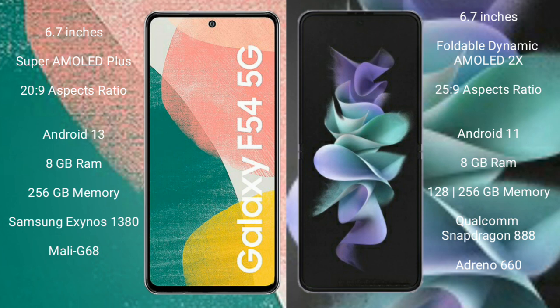The Samsung Galaxy A54 comes with 8GB RAM and 256GB internal storage, powered by the Samsung Exynos 1380 processor with Mali-G68 GPU. The Samsung Galaxy Z Flip 3 comes with 8GB RAM and 128GB or 256GB internal storage, powered by the Qualcomm Snapdragon 888 processor with Adreno 660 GPU.